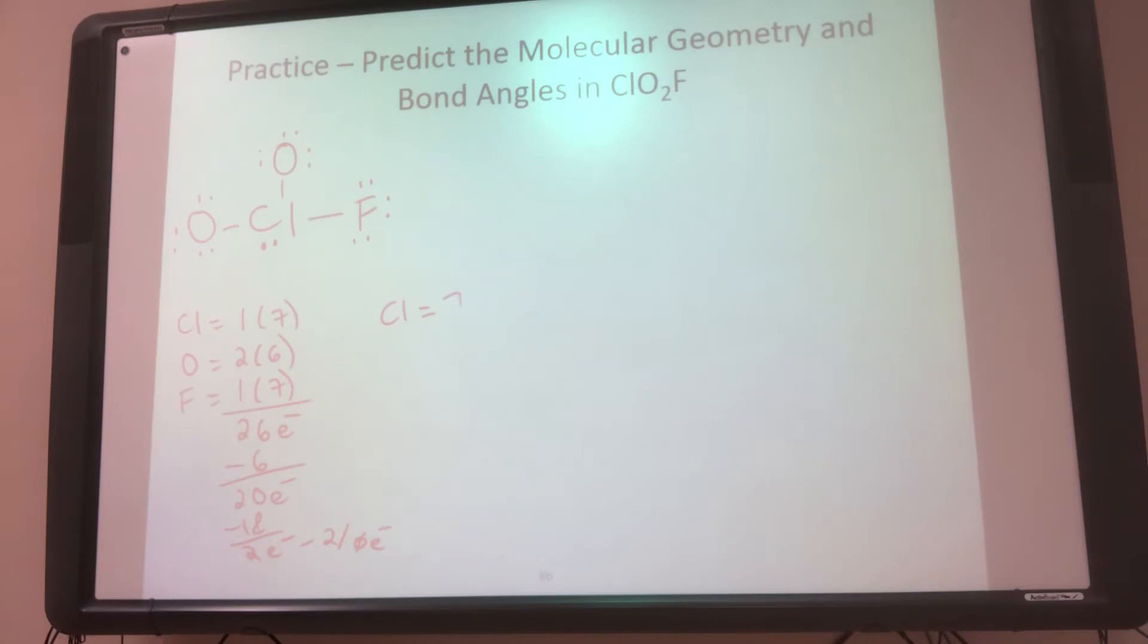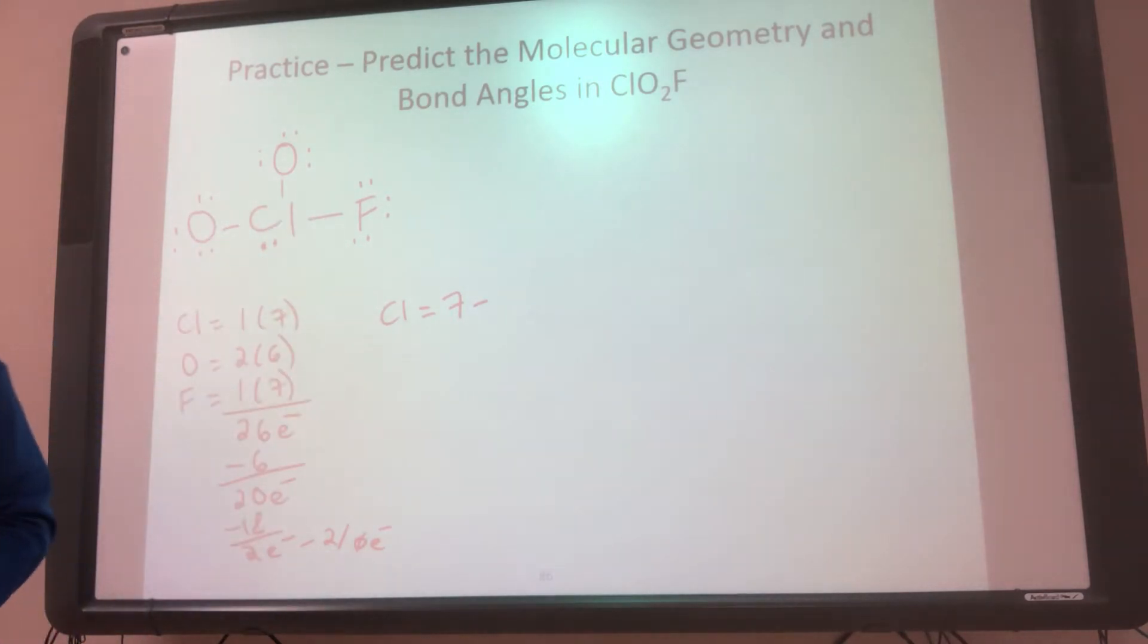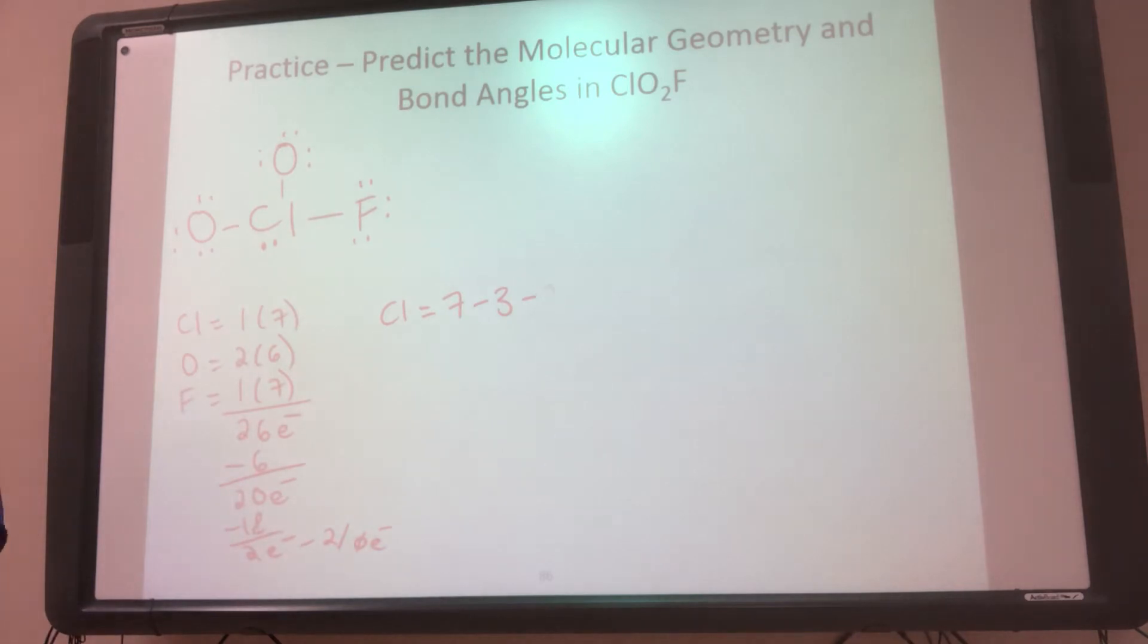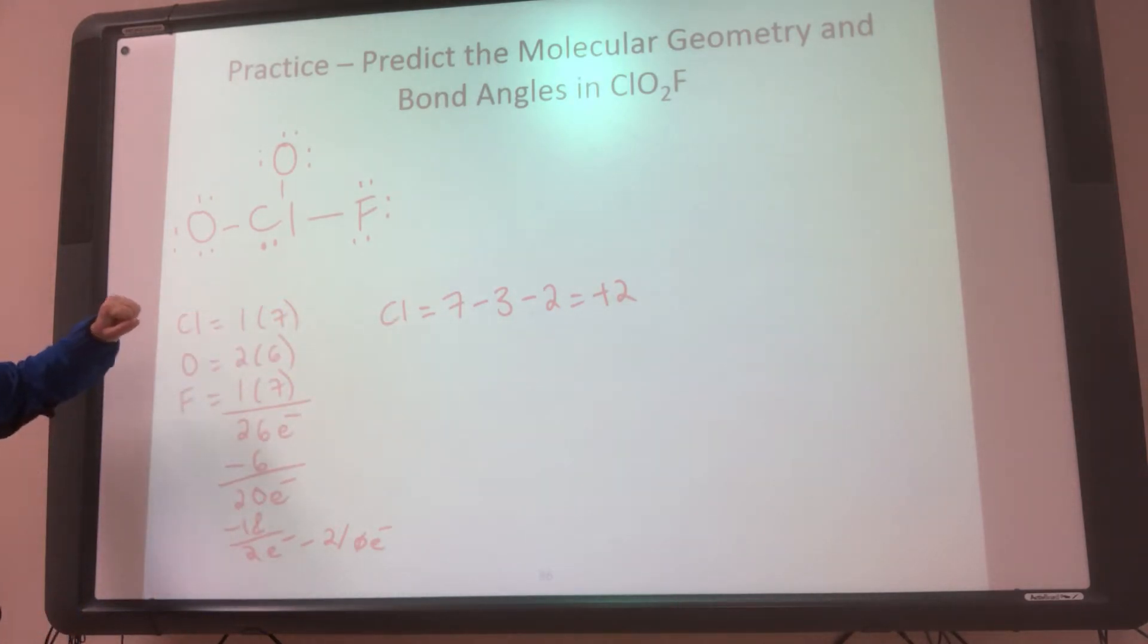So let me do the formal charge on the chlorine. So chlorine has 7 valence. How many bonds? 1, 2, 3 bonds. And 2 electrons. So that gives him a plus 2. So then I want to know, well, where can I move electrons from?